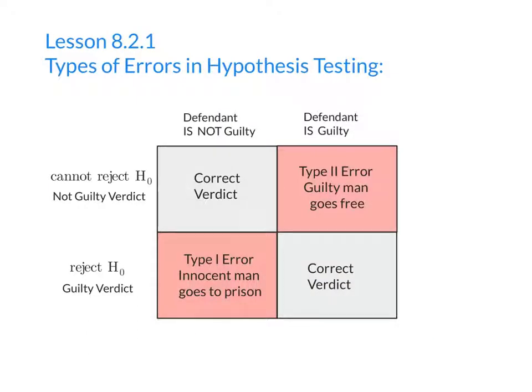Problem 8.27 introduces the terms type 1 error and type 2 error using the classic metaphor of a court trial. After this problem, students should realize that, in most cases, type 1 errors are more egregious than type 2 errors.